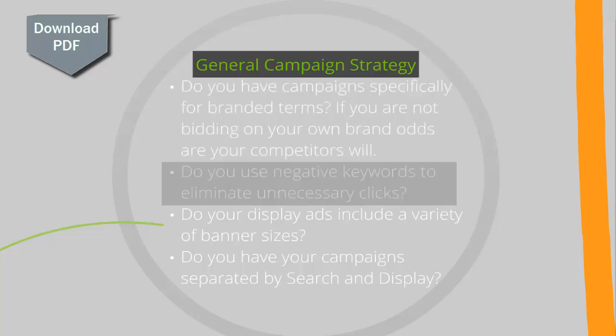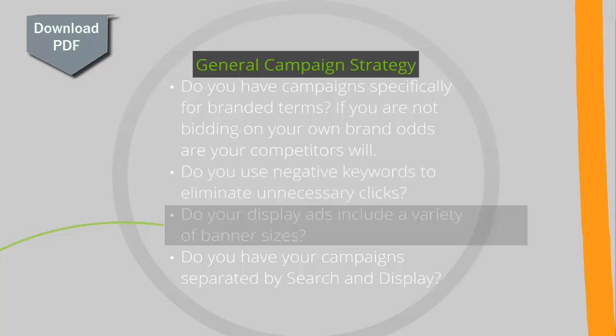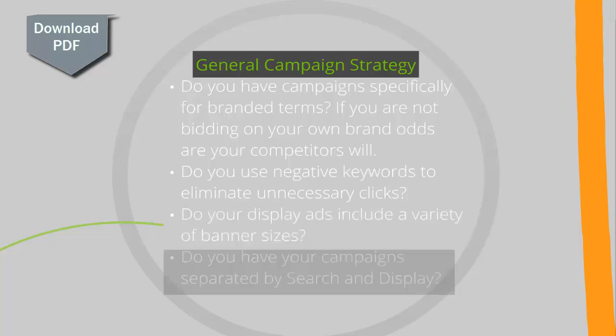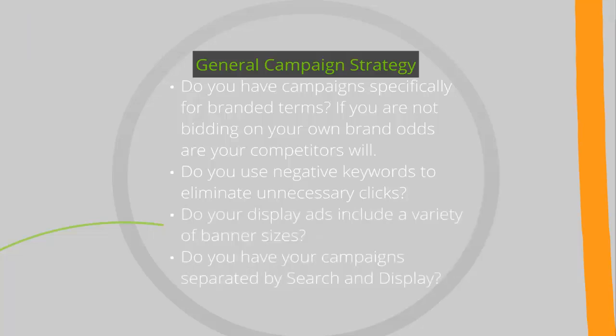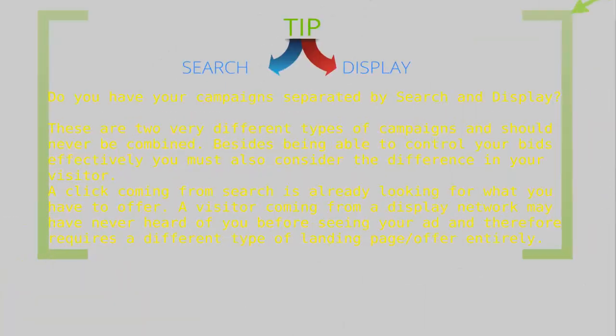Do you use negative keywords to eliminate unnecessary clicks? Do your display ads include a variety of banner sizes? Do you have your campaigns separated by search and display? These are two very different types of campaigns and should never be combined. Besides being able to control your bids effectively, you must also consider the difference in your visitor. A click coming from search is already looking for what you have to offer, while a visitor from a display network may have never heard of you before seeing your ad, and therefore requires a different type of landing page or offer entirely.